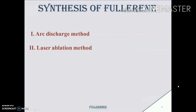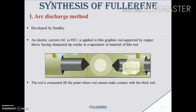Buckyballs can commonly be synthesized by either of two methods: the arc discharge method and the laser ablation method. In the arc discharge method, two graphite rods — shown as gray colored rods supported by a copper sleeve — are placed at least one millimeter apart. A DC plasma is then applied so that the carbon from the graphite rods vaporizes and forms a hot plasma.